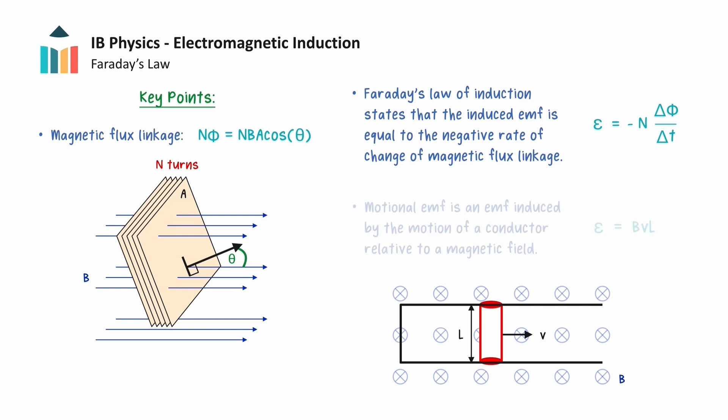We then saw that the motion of a conductor in a magnetic field can induce an EMF between the ends of the conductor. This is known as a motional EMF, and can be calculated from the magnetic flux density, speed of the conductor, and length of the conductor in the magnetic field. This now concludes this video on Faraday's law of induction. Thank you for watching.